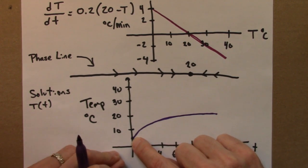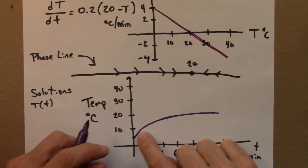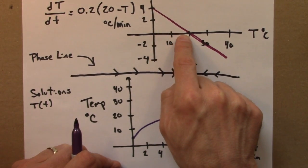And initially I'm warming up very quickly, because this function is large, and then the rate at which I'm warming up decreases as I approach 20.